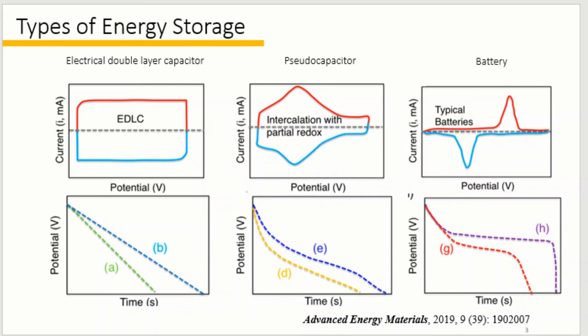There are several electrical characterization methods. Here we show cyclic voltammetry and galvanostatic charge discharge. In cyclic voltammetry, we charge and discharge a device with a constant scan rate, for example 100 µV per second, 1 mV per second, or even 100 V per second. For galvanostatic charge discharge, we charge and discharge a device with constant current density. We can differentiate the type of device based on the shape of the CV and GCD curves.